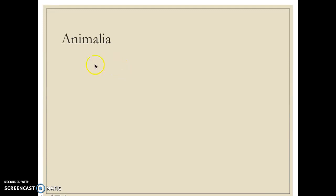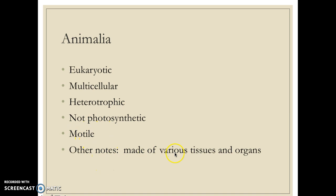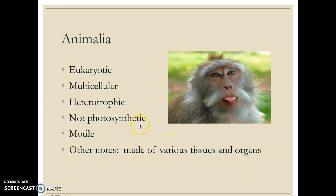The last kingdom is animalia — the one most interesting to us because it's what we can see. We are eukaryotes, and this is where we belong. Animals are multicellular and heterotrophic — we do not make our own food; we have to consume it. We are motile and move around. Something interesting about us is that we have various tissues and organs. Plants have organs too, but animals are a lot more complex.